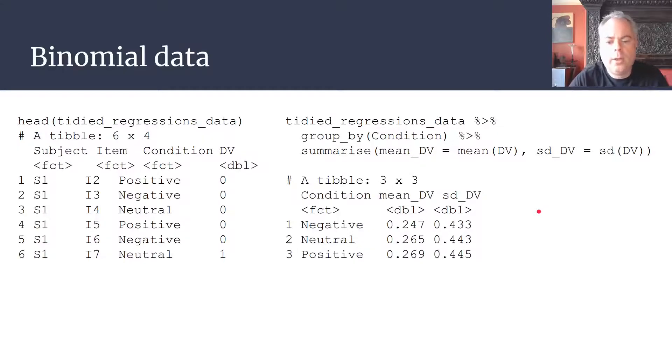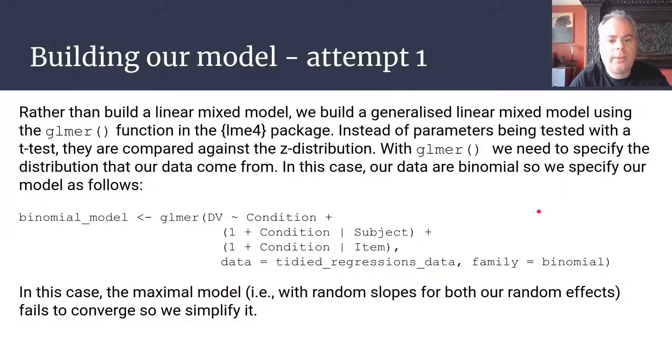But we need to build our model to determine whether or not that's the case. Rather than build a linear mixed model, we're going to build what's known as a generalized linear mixed model using the glmer function. In contrast to just using lmer, we're going to use the glmer function in the lme4 package. It works exactly the same as lmer, except that we have to specify the family—the distributional family that our data are being sampled from.